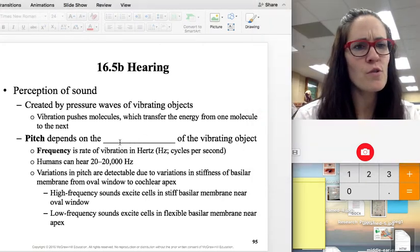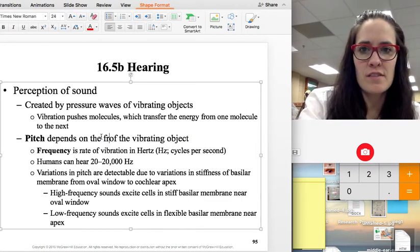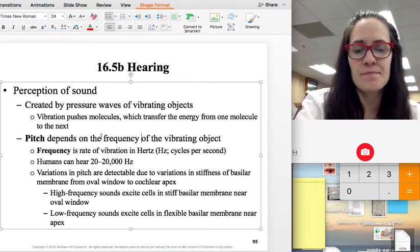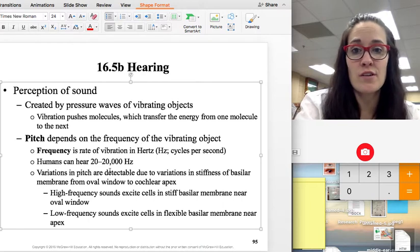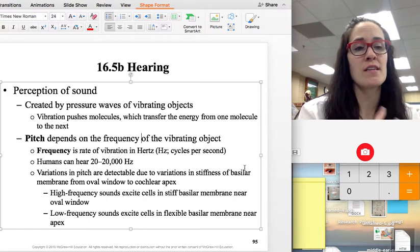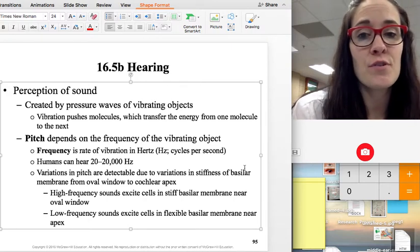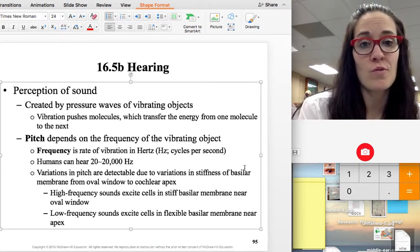There's a few qualities of hearing. One of them is pitch. This is the frequency of the vibrating object. Humans can hear something from 20 to 20,000 hertz. And our variations in what we detect as low pitch or high pitch have to do with the variations in the basilar membrane in that cochlea.